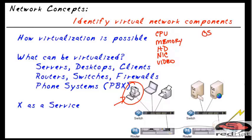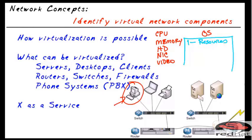When the operating system boots up, it looks at the resources — how much memory, how much disk storage, what kind of video card, network card, and CPU. It knows all of these things, and once it knows about those resources, it can go ahead and use them.